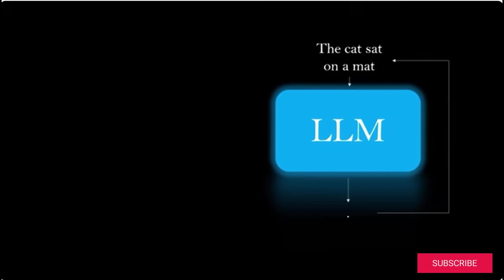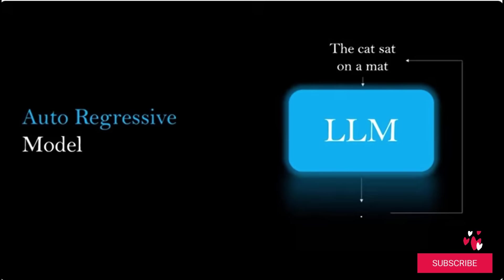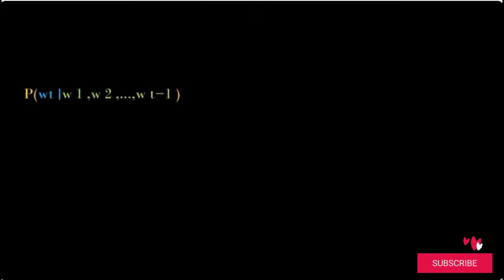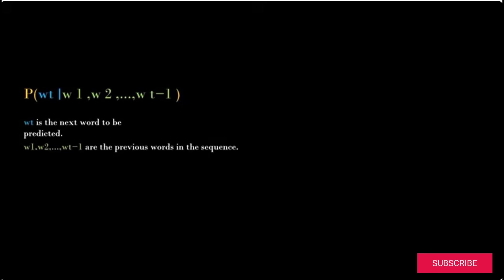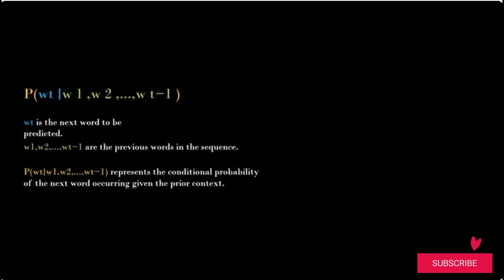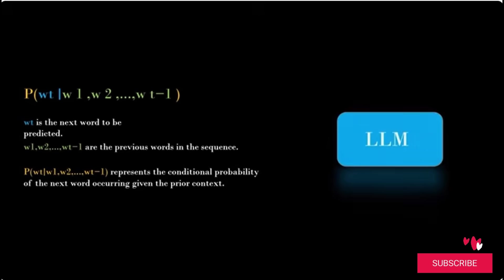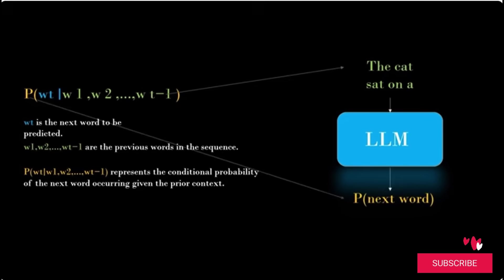This predictive nature of LLMs is called an autoregressive model. Mathematically, the next word is predicted based on all previous words using conditional probability, where W_T is the next word to be predicted, W_1, W_2, ..., W_(T-1) are the previous words in the sequence, and the equation represents the conditional probability of the next word occurring given the prior context. For example, with the context 'the cat sat on,' the model generates a probability distribution for the next word, and the token is then sampled using that probability.